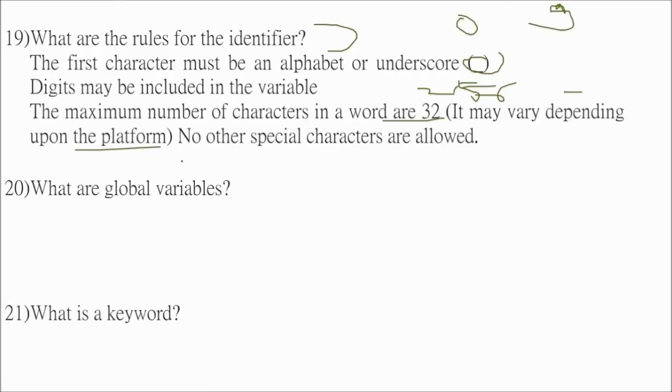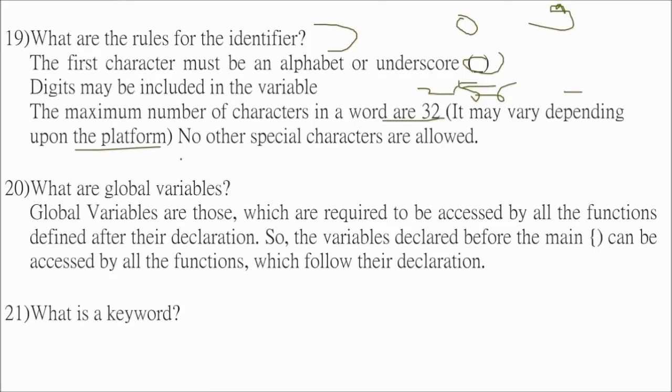What are global variables? Global variables are those which are required to be accessed by all the functions defined after their declaration. So the variables declared before the main function can be accessed by all the functions which follow their declaration. These are global variables.